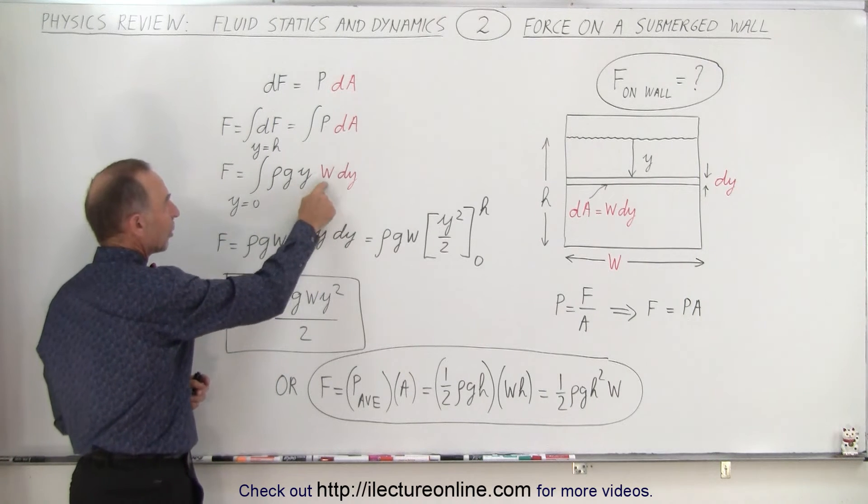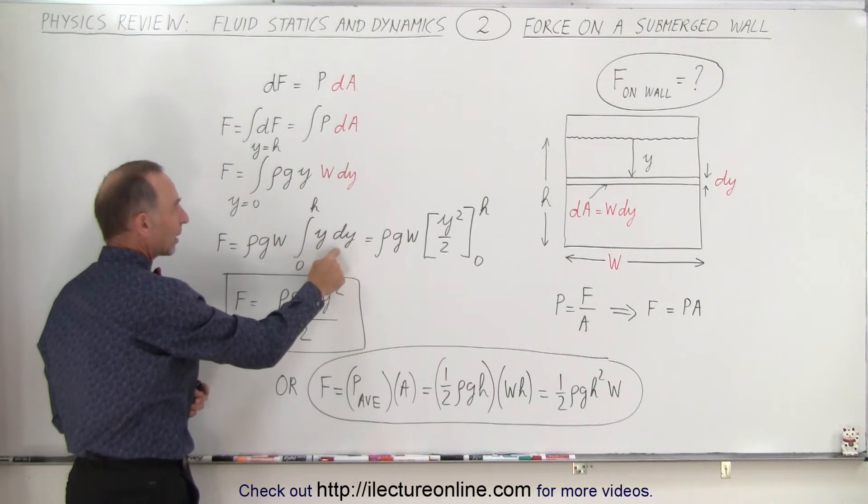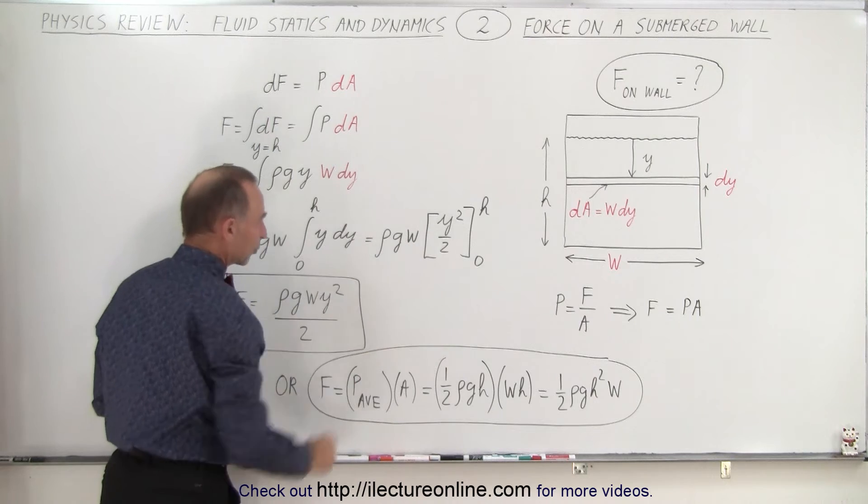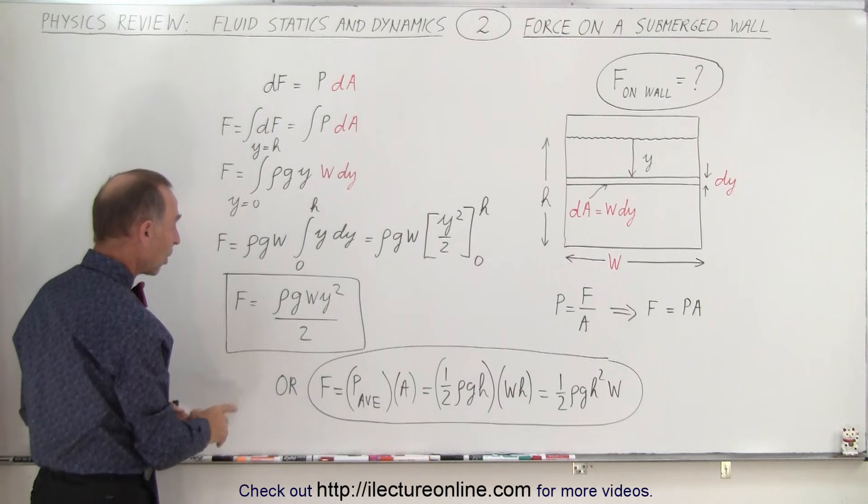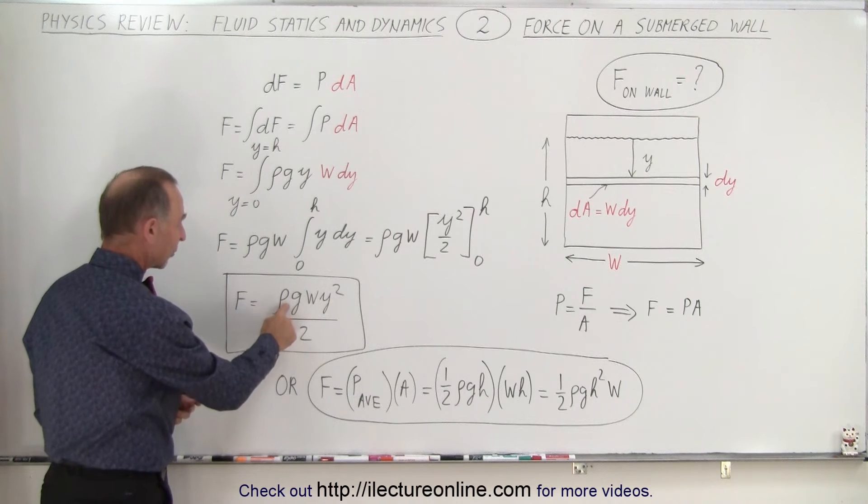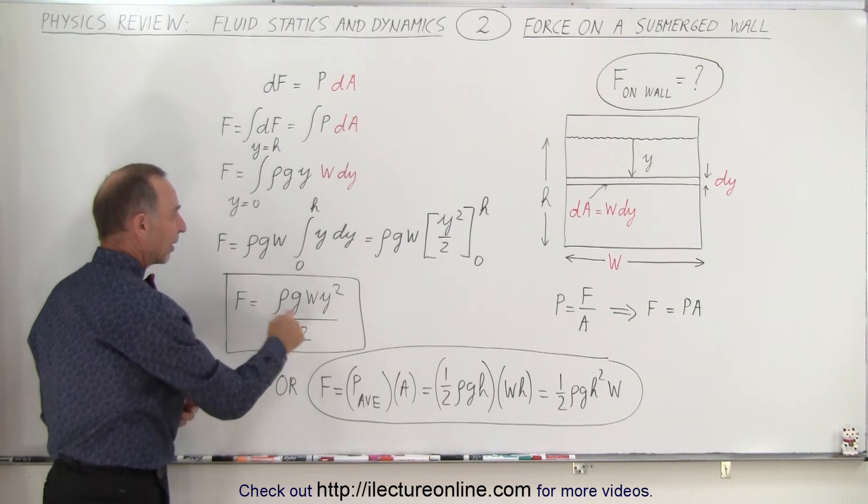So we know that rho g and w are all constants. They come outside the integral sign. We simply have y dy left. When we integrate we get y squared over 2. When we plug in the limits we end up with the equation for the force of a submerged wall, which is the density times acceleration of gravity times the width of the wall times the height squared divided by 2.